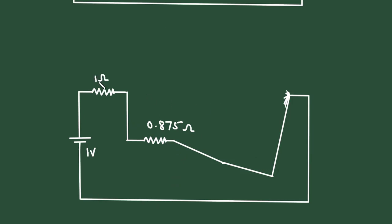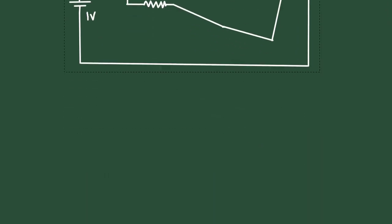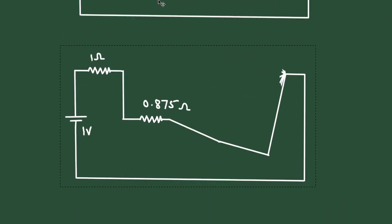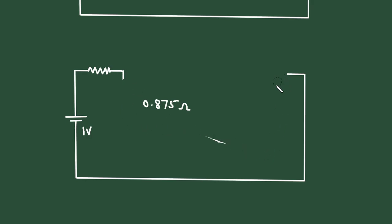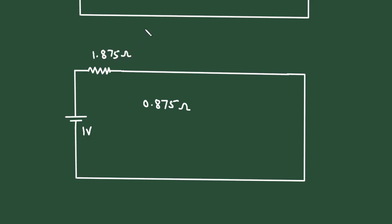Now again we can see this 1 ohm and this 0.875 ohm are connected in series. When we add them, this becomes a single resistor of 1.875 ohm, which is the total equivalent resistance of the circuit.